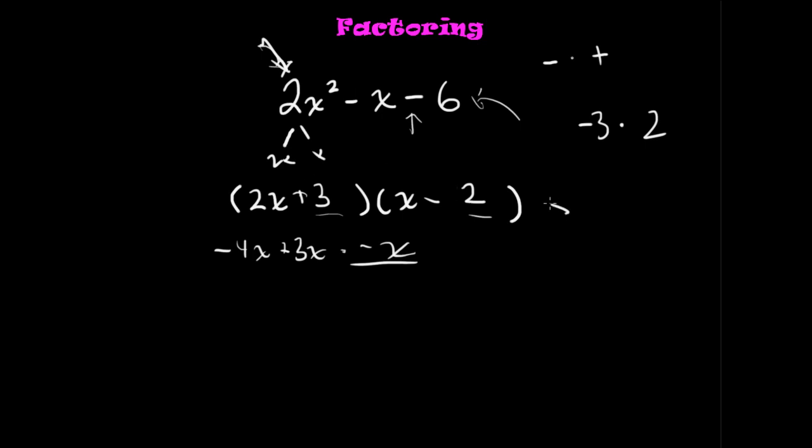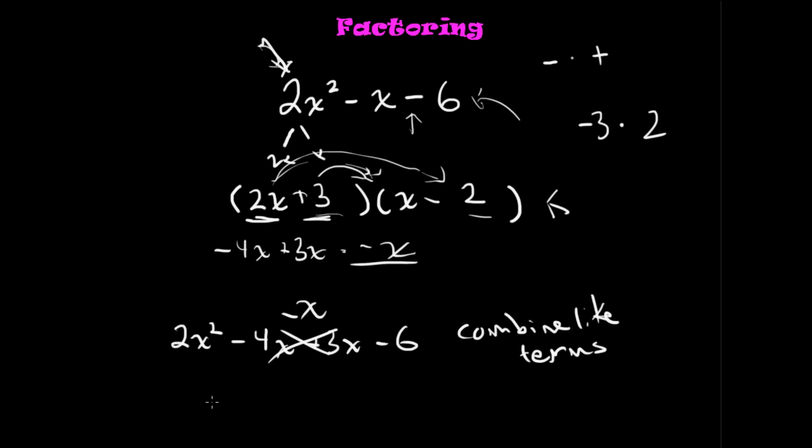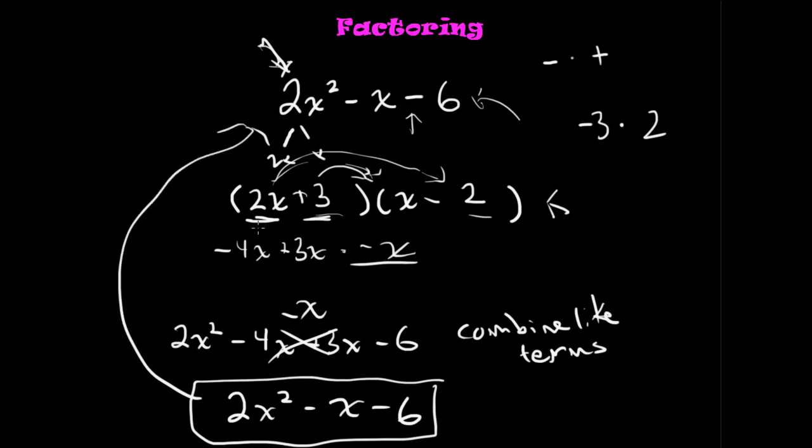So, let's go ahead and just distribute this whole thing through and make sure our answer is correct. We'll distribute the first term first through both terms on the right-hand side. So, 2x times x is 2x squared. 2x times negative 2 is negative 4x. Now, the second term, 3 times x is 3x. And, 3 times negative 2 is negative 6. These combine to negative x because you have to combine like terms. So, that gives us 2x squared minus x minus 6. Which happens to be the same as what we had started with. So, this is the factored version.